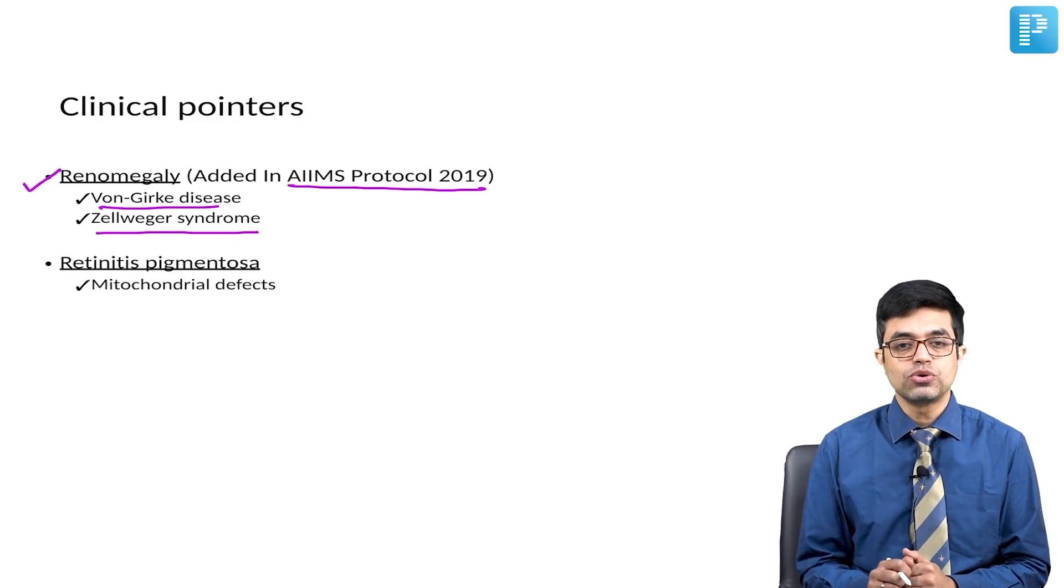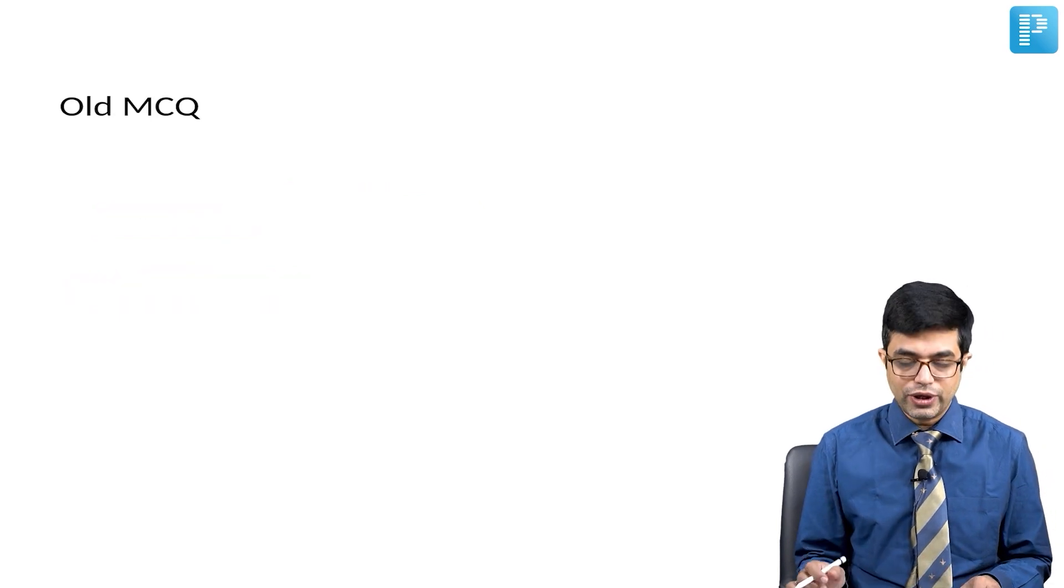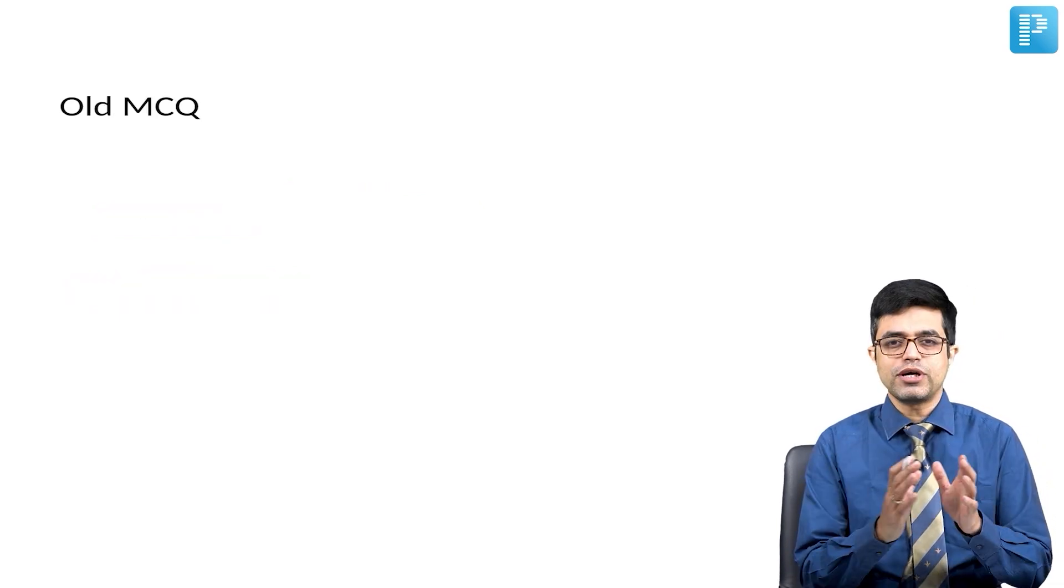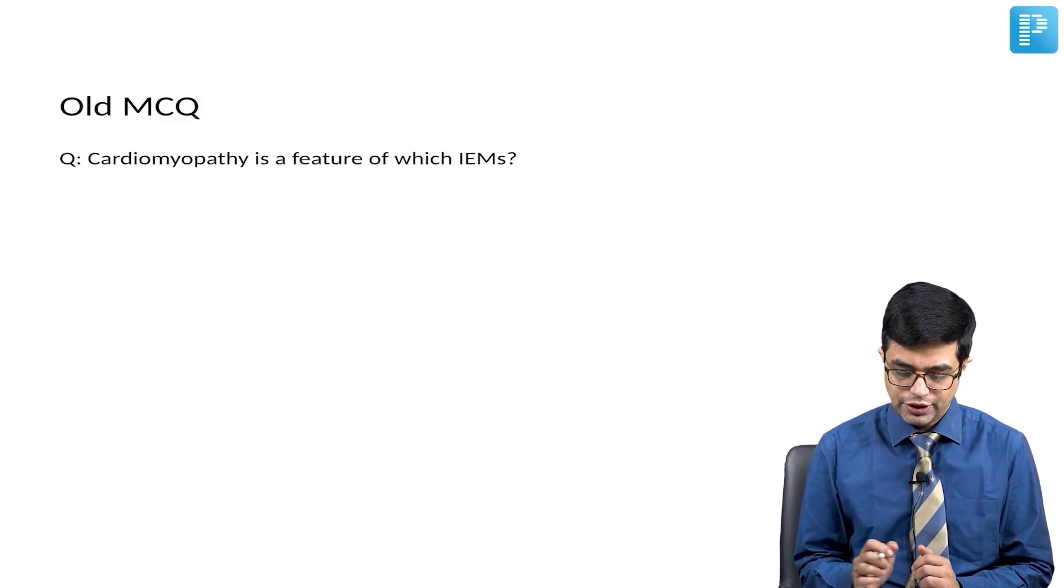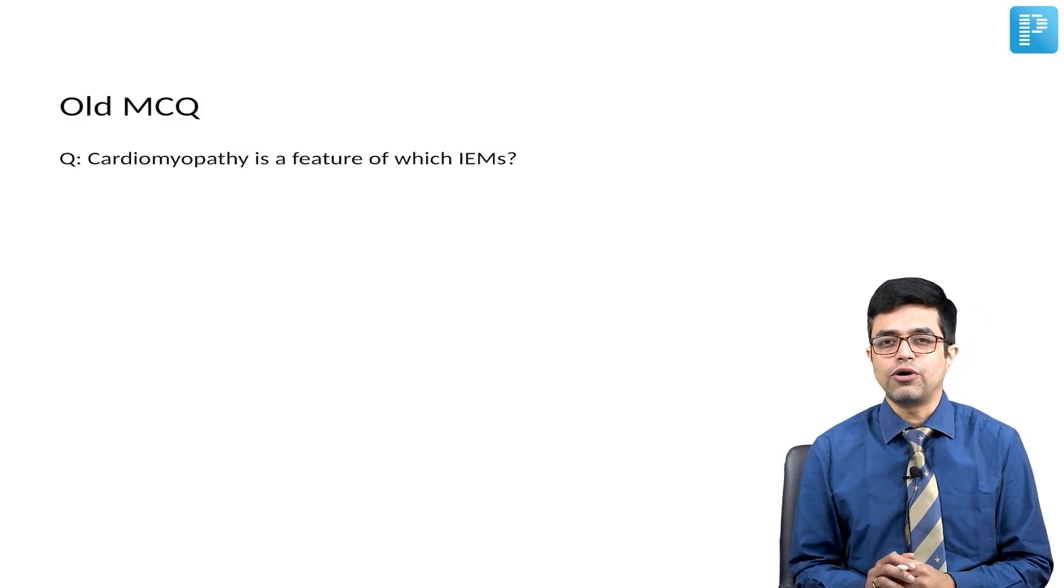Then we have retinitis pigmentosa, which is a feature of mitochondrial defects. Old MCQ. Let us look at an old MCQ which was asked. The question was asked in a slightly different way. The question was, cardiomyopathy is a feature of which IEM? It was not asked in this form.